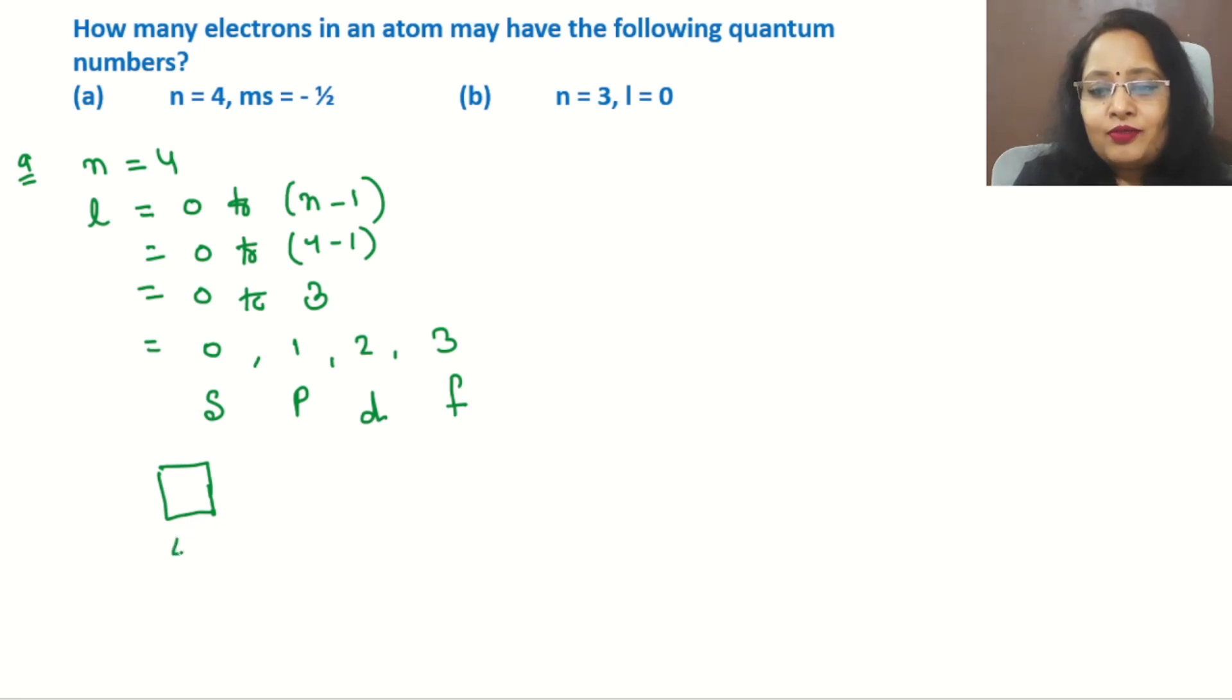For the s subshell, we know it has only one orbital which carries two electrons—one with positive spin, one with negative spin. This is 4s. We need to find the negative spin, so we have one electron here having negative spin.